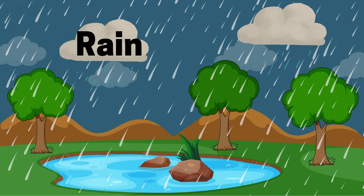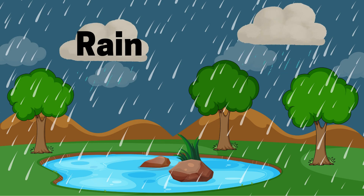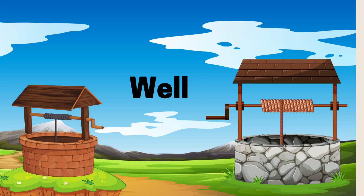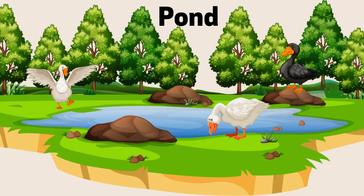The main natural source of water is rain. Rain is nature's way of giving us water. Wells are like hidden beneath the earth — people dig wells to find groundwater for drinking and farming.